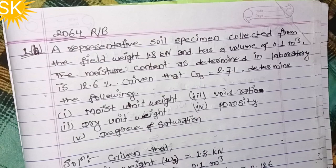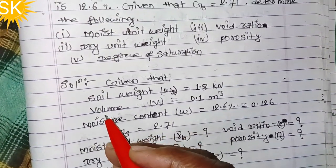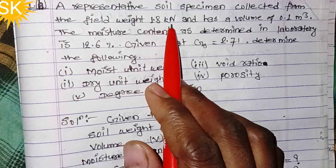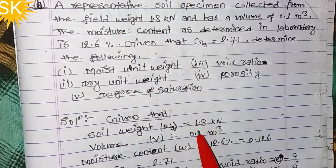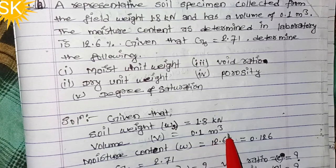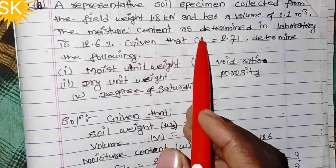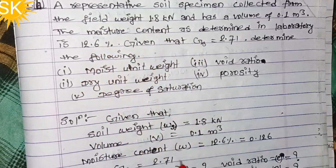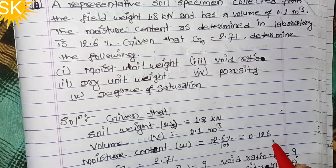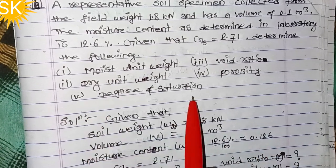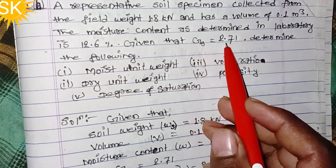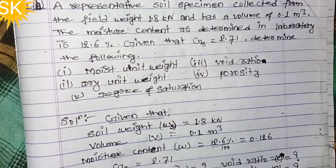Gs equals 2.71, determine the following: moisture unit weight, dry unit weight, void ratio, porosity, and degree of saturation. Given that the soil weight Ws equals 1.8 kilonewton, volume equals 0.1 meter cube, and moisture content